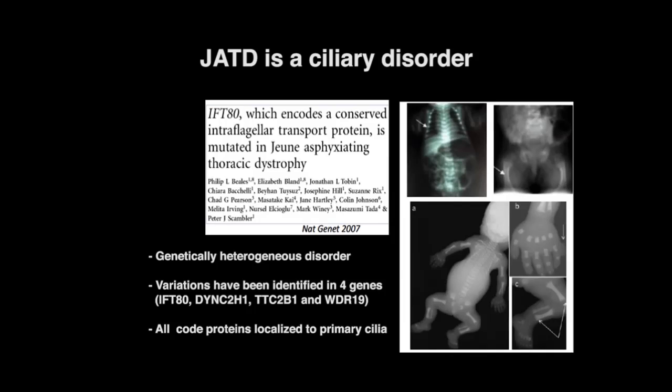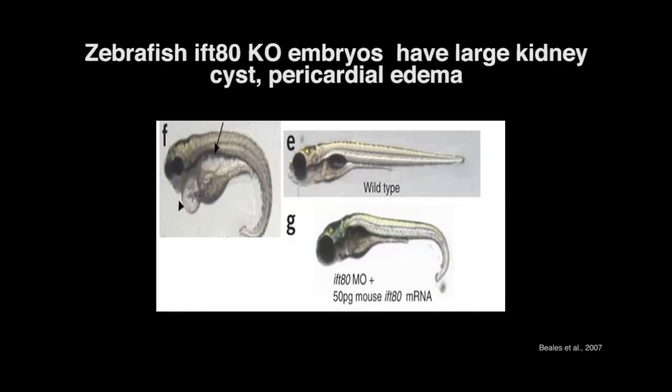In 2007, it was revealed that mutations in IFT-80 leads to Jeune syndrome, a genetically heterogeneous disorder caused by variation in different genes. This disease is characterized by long narrow thorax, short rib, short long bones and polydactyly or extra digits. A lot of work has been done in zebrafish to better understand how depletion of IFT-80 leads to JATD.